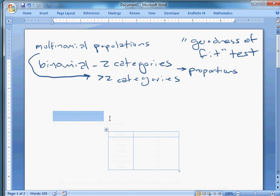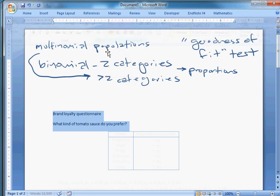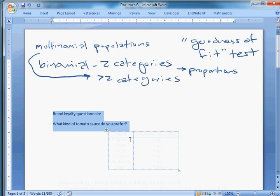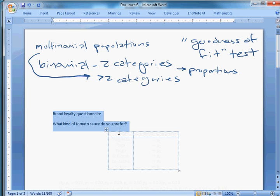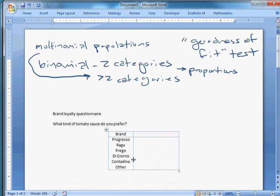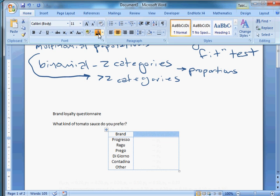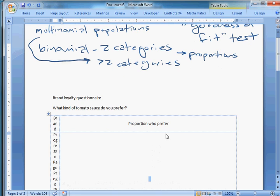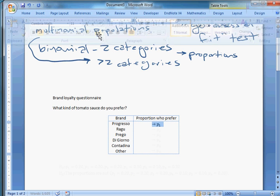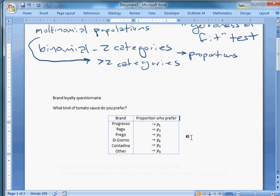Let's use an example we're gonna be working on today. We have a brand loyalty question where we're asking customers what kind of tomato sauce they prefer. They tell us one of these things: they prefer Progresso, Ragu, Prego, Di Giorno, Contadina, or Other. We're gonna ask a bunch of people and then find the proportion of the population that chooses Progresso. The proportion that chooses Progresso is gonna be p1, the proportion that likes Ragu is p2, and so on.